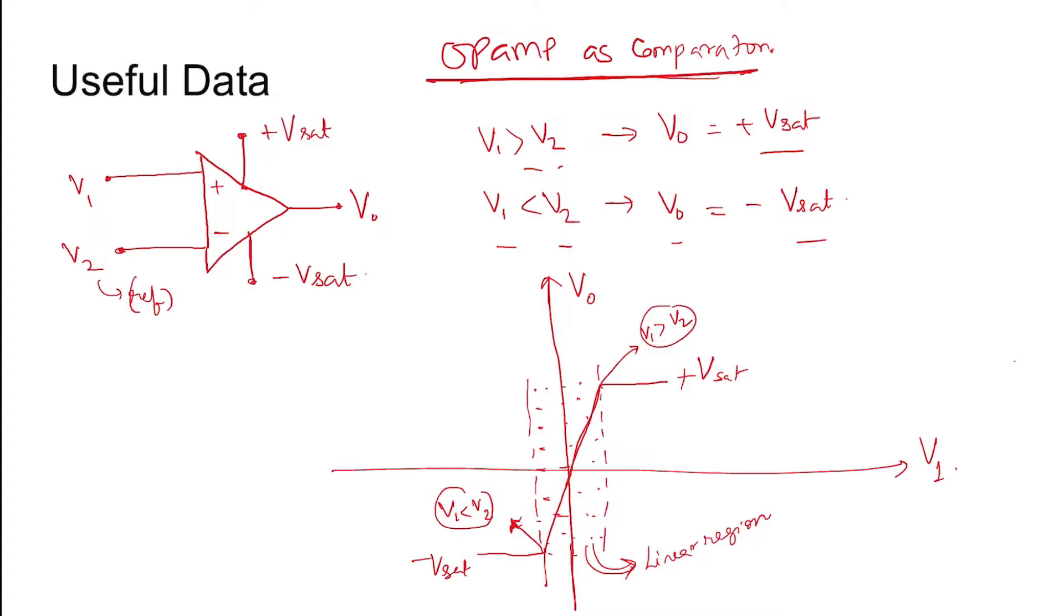This is the v0 versus v1 curve. If v2 is kept constant, then when v1 exceeds v2, the output saturates to plus Vsat. And if it is less than v2, then output saturates to minus Vsat. This is the output voltage curve.